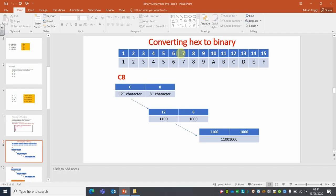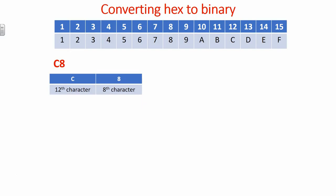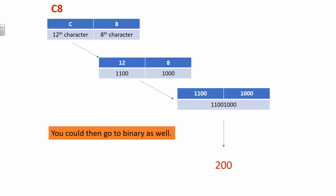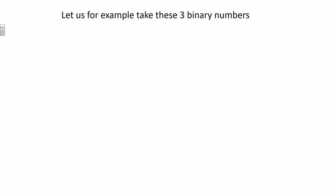To work it out I'll go full screen and step through it. We're going to convert C8 into binary. Separate them out: C is on the left, 8 is on the right. C is the 12th character in the table, and 8 is obviously the 8th. So C maps to 12 and 8 maps to 8. Convert each to four-digit binary: 12 is 1100 because we need an 8 and a 4; 8 is 1000. Then just join them together to make one eight-digit binary number.